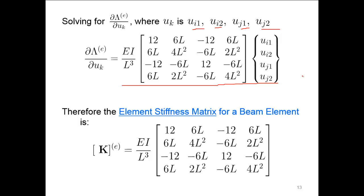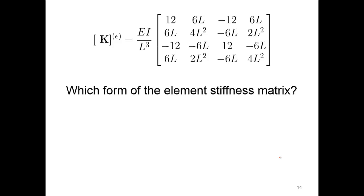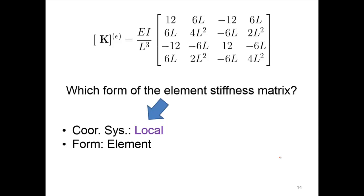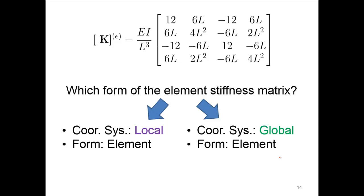Which form of the element stiffness matrix is this? We started in local coordinates, and the form is in elemental form. It's actually both local and global, because all the beams we're looking at are horizontally oriented. So whatever we see in deflection locally is reflected in global coordinates — this stiffness matrix is essentially in both coordinate systems.